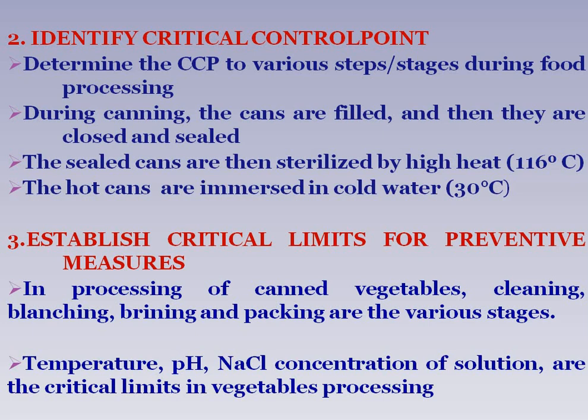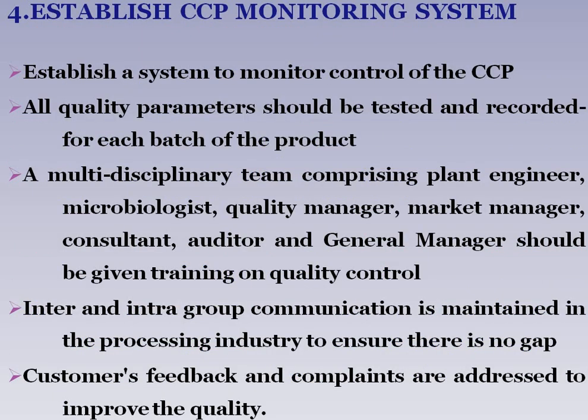The third principle is to establish critical limits for preventive measures at various stages of food processing. The microbial contaminant population is assessed at various levels under these critical conditions, enabling preventive measures and control of the CCPs.